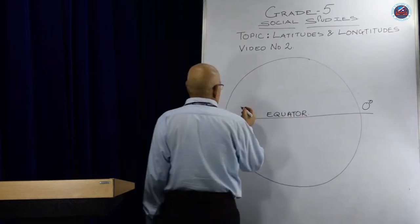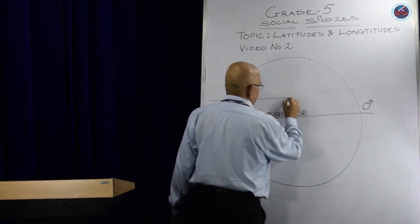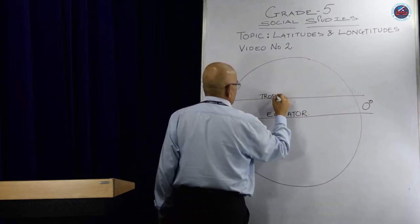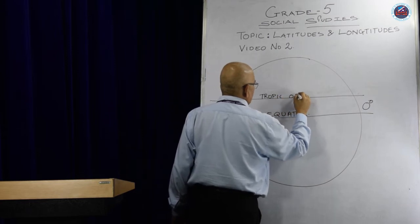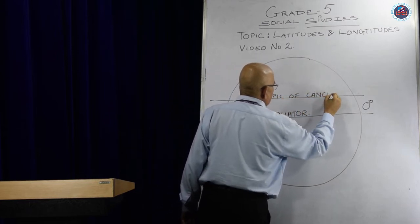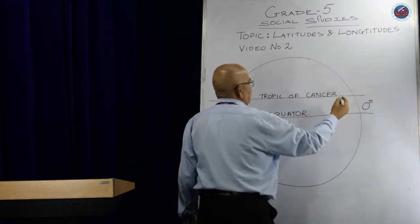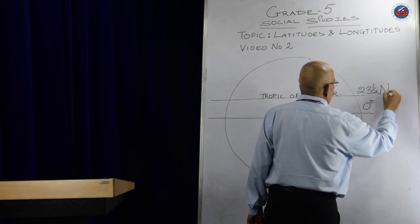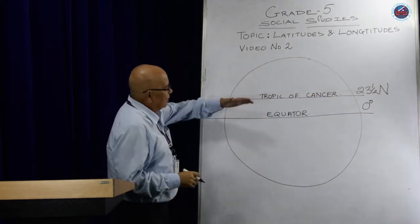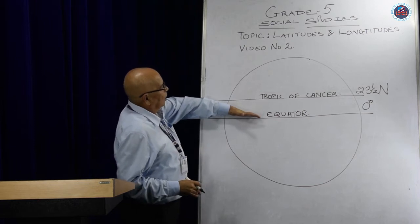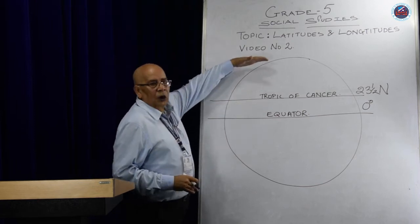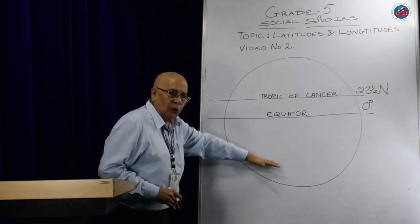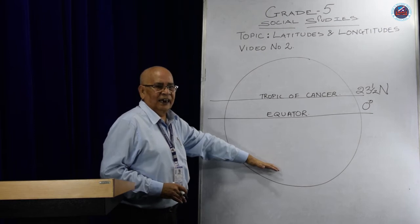Then we have another important one, that is the Tropic of Cancer, which is 23 and a half degrees north latitude. Remember, whichever latitudes are on top of the equator are known as north latitudes, and whatever are below the equator are known as southern latitudes.